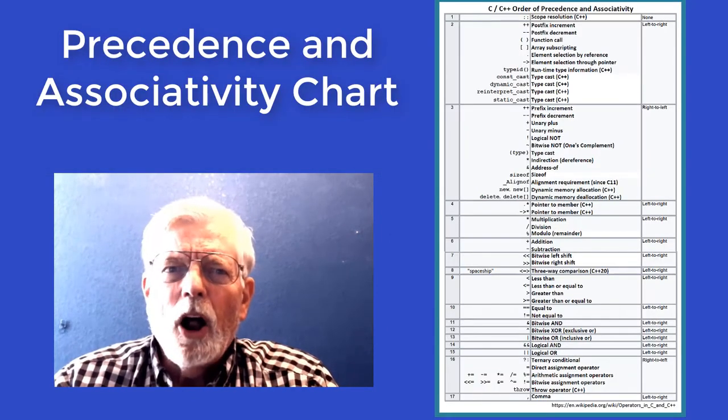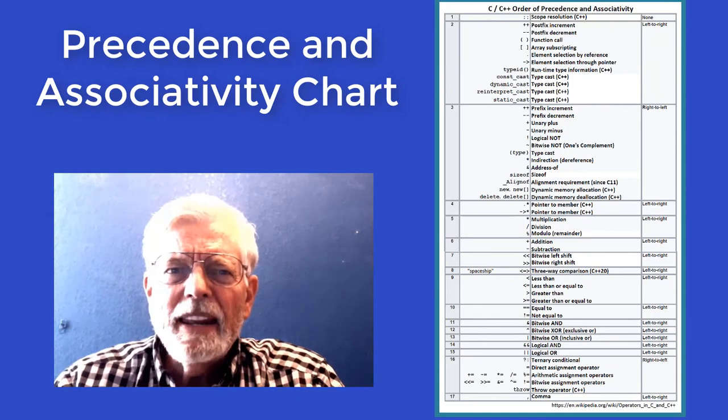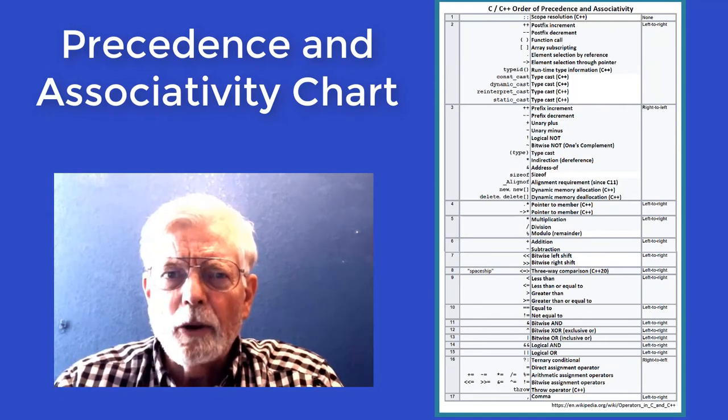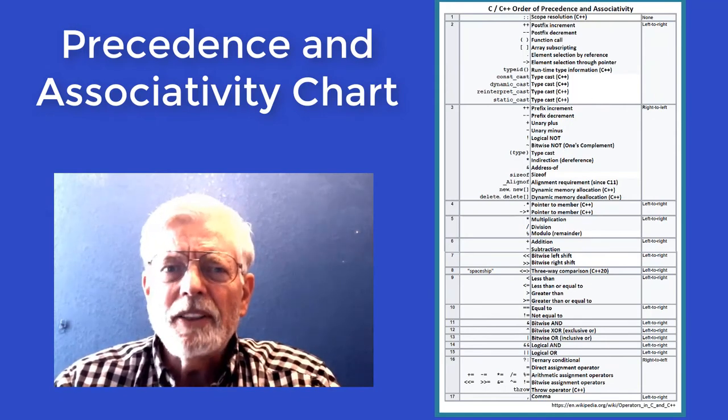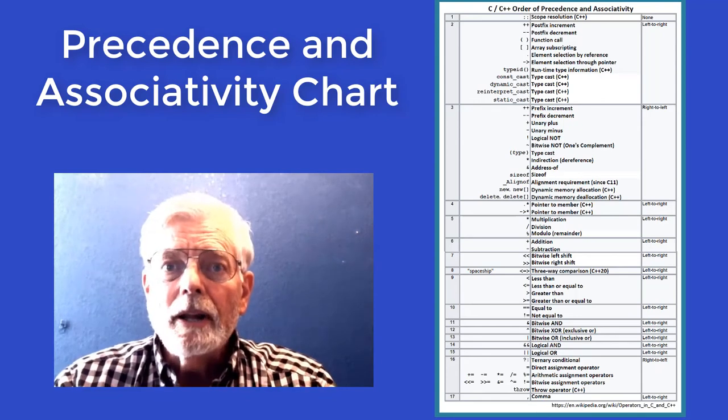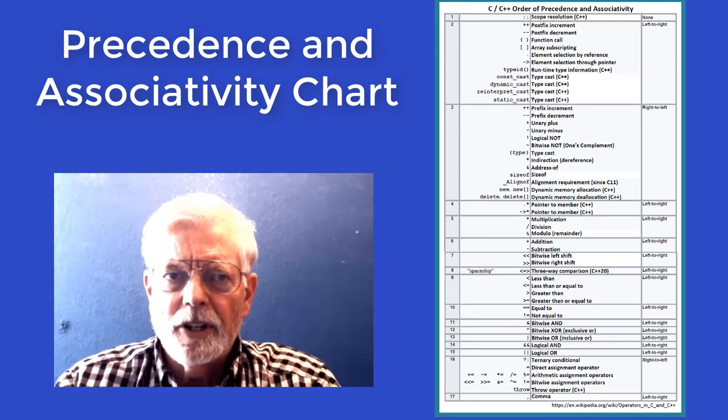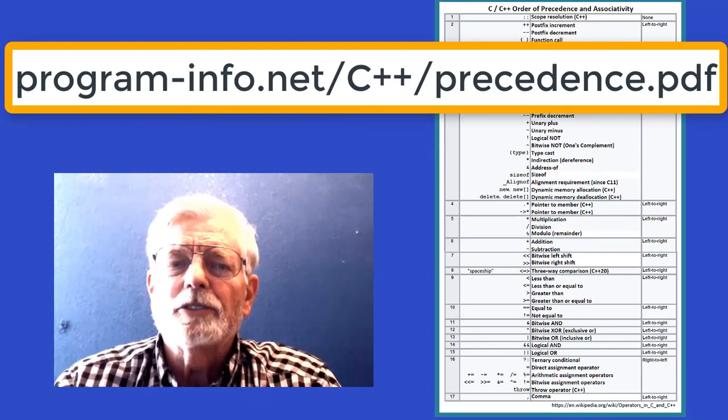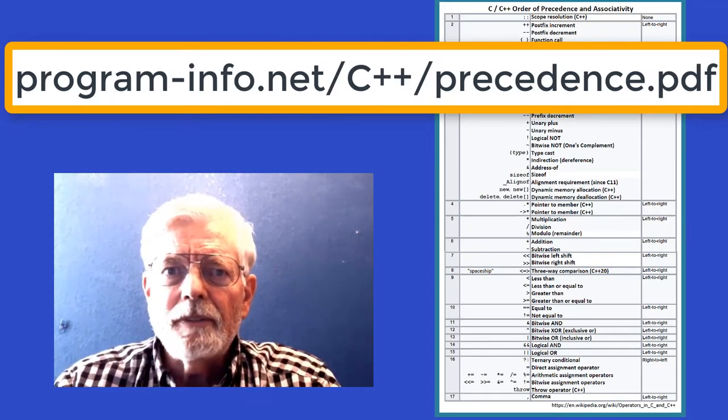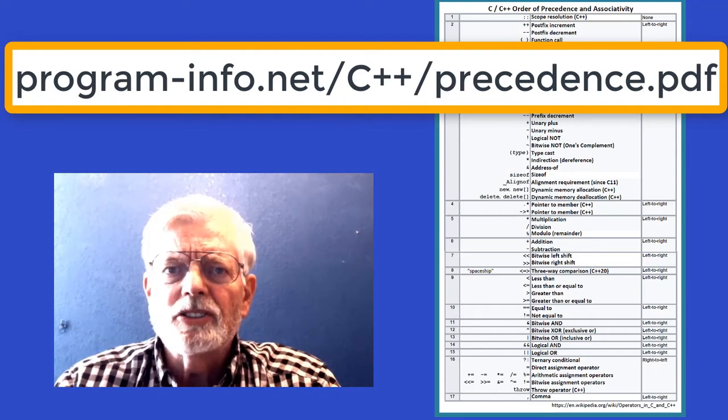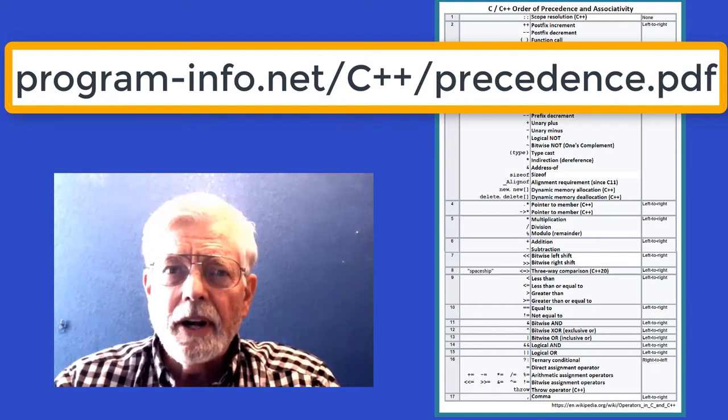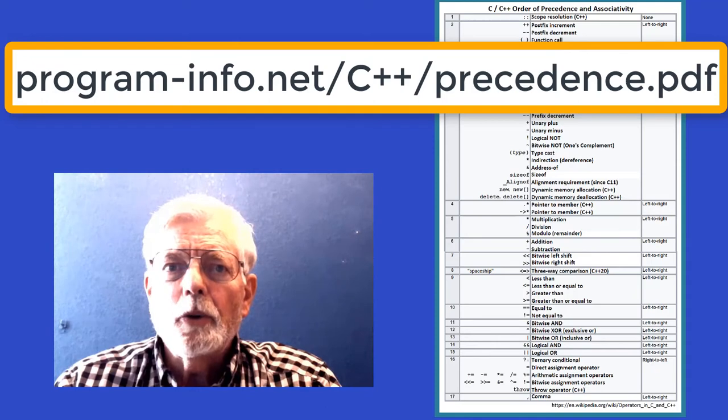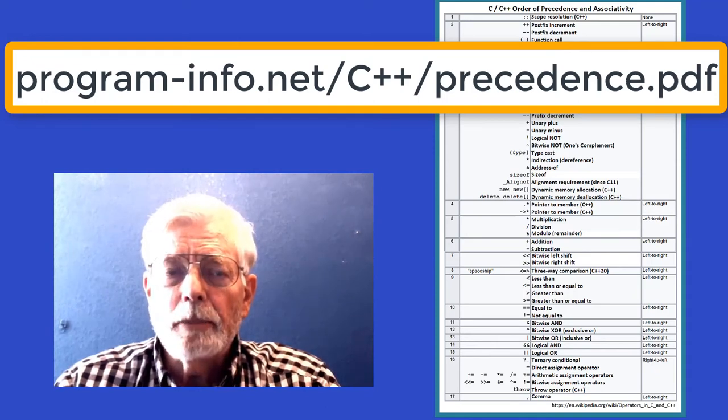Even though I had already been programming for many years before learning the C language, there were just too many things to remember, including the many different levels of precedence. I highly recommend getting a copy of the precedence and associativity chart and either save it on the disk where you can easily find it or print it out and keep it near you while you write programs in C or C++.